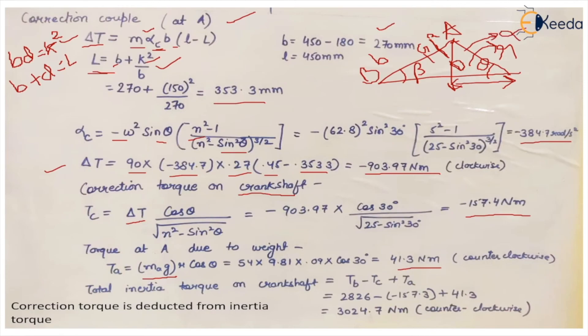The total inertia torque on the crankshaft combines all components: the inertia torque from the reciprocating parts (Tb) minus the correction torque plus the torque due to the weight of the additional mass at the crank pin. Substituting all values, with the correction torque deducted from the inertia torque, gives the final resultant inertia torque, which acts in the counter-clockwise direction.